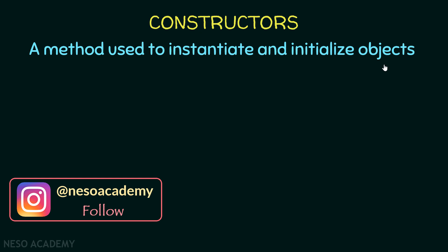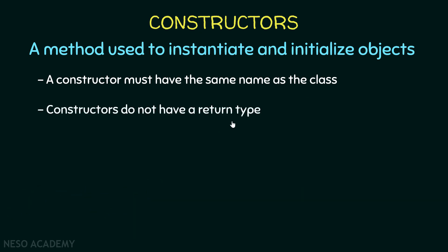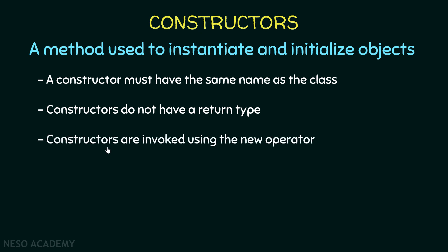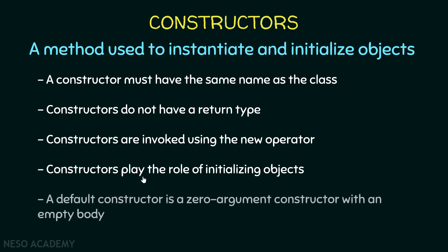First of all, a constructor must have the same name as the class. For example, the constructor of the String class is called String, the constructor of the Point class is called Point, and the constructor of the Circle class that we created is called Circle. Moreover, constructors don't have a return type, and constructors are invoked using the new operator.